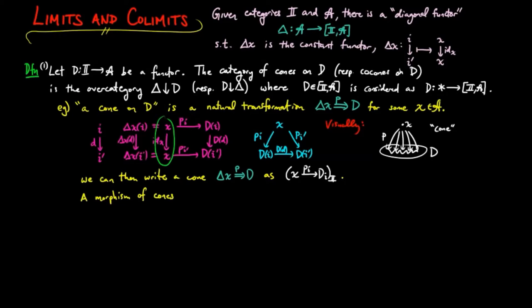And a morphism of cones is a morphism in the over category. But since the terminal category has only one identity morphism, a morphism of cones from (x,p) to (x',q) is given by an A morphism f such that the triangle of natural transformations commutes. And we recall that delta f is a natural transformation with components equal to f.